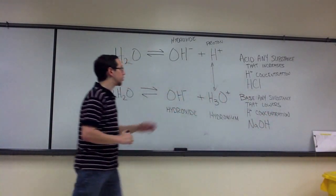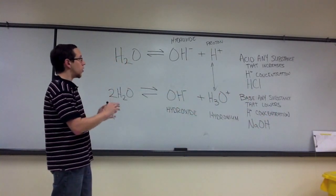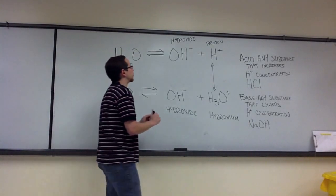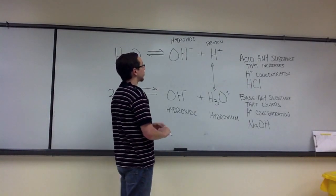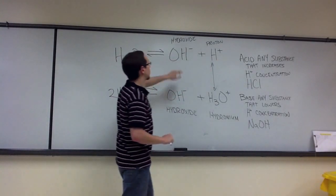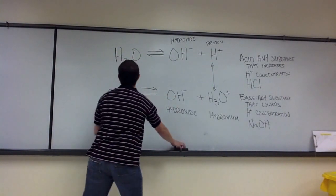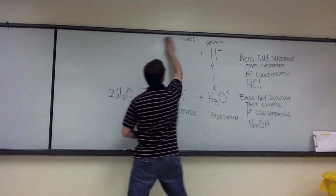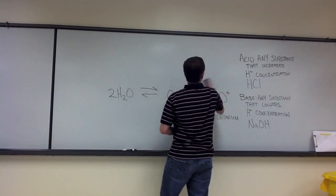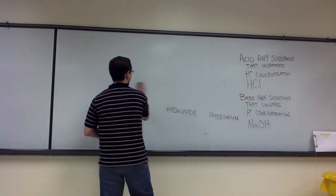In addition to looking at acids and bases, we also want to look at the scale that's used to measure the relative proton concentration compared to that of the hydroxide ion concentration. That scale, of course, is referred to as the pH scale.